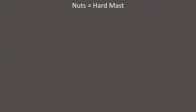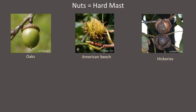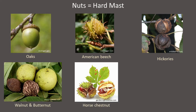Nuts are often referred to as hard mast. Most hard mast is produced by trees, and the most common hard mast-producing trees in New England are oaks, American beech, and the hickories. Black walnut, butternut, and horse chestnut trees also occur in some landscapes.